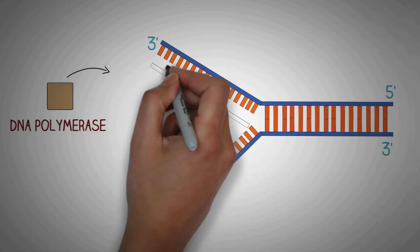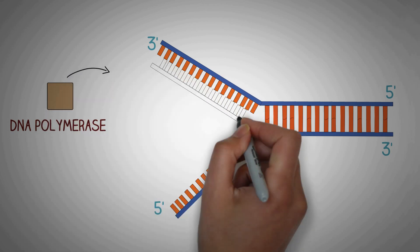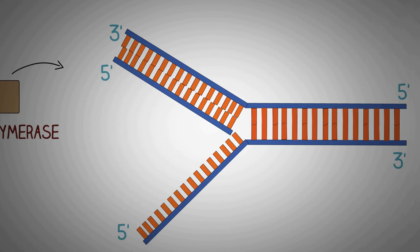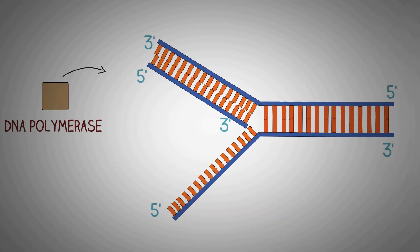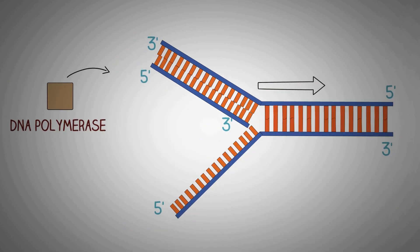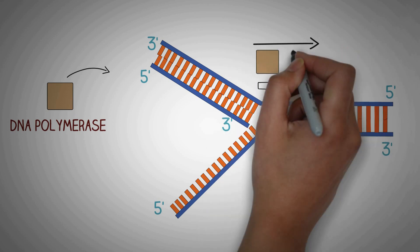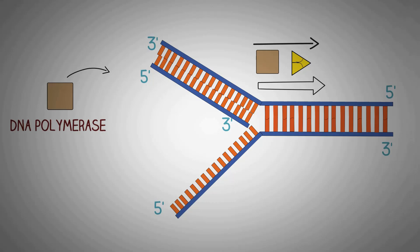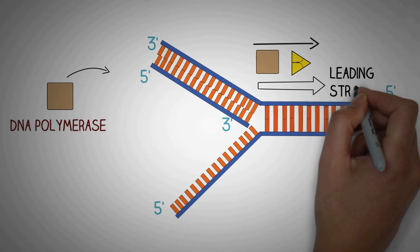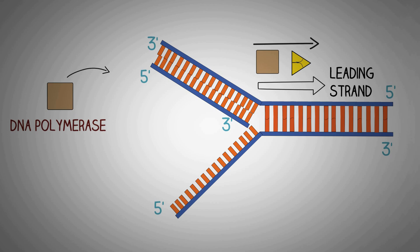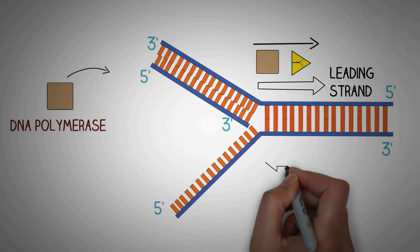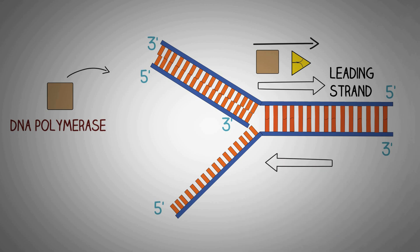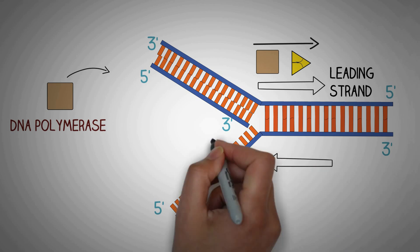The main enzyme, DNA polymerase, which has the job of forming new strands of DNA, can only synthesize a strand from the five prime to the three prime direction. Since the upper daughter strand is running from the three prime to five prime direction, the DNA polymerase can easily form the replicated opposite strand from the five prime to three prime direction. Since the helicase is also unzipping the DNA in the same direction, the DNA polymerase can form the new strand continuously.